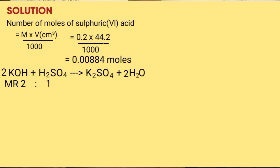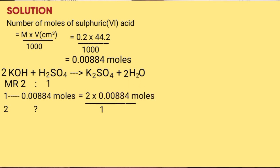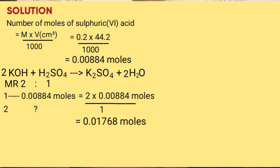From the mole ratio of 2 to 1: if 1 corresponds to 0.00884 moles of sulphuric acid, cross multiply to find the moles of potassium hydroxide. That gives 0.01768 moles. So that is the number of moles of potassium hydroxide in 25 cm³.